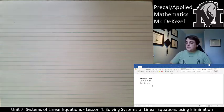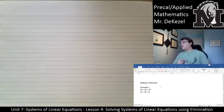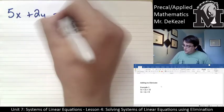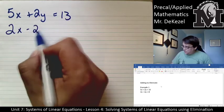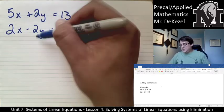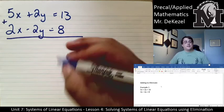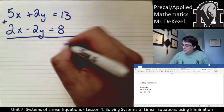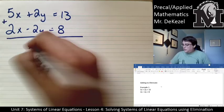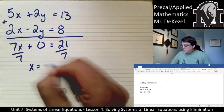We have two more examples, and with these we're going to add instead of subtract to eliminate. We have 5x + 2y = 13 and 2x − 2y = 8. Because the y's are the same number but opposite in sign, adding accomplishes the same elimination: 13 + 8 = 21; 2y + (−2y) = 0; 5x + 2x = 7x. Dividing both sides by 7: x = 3.